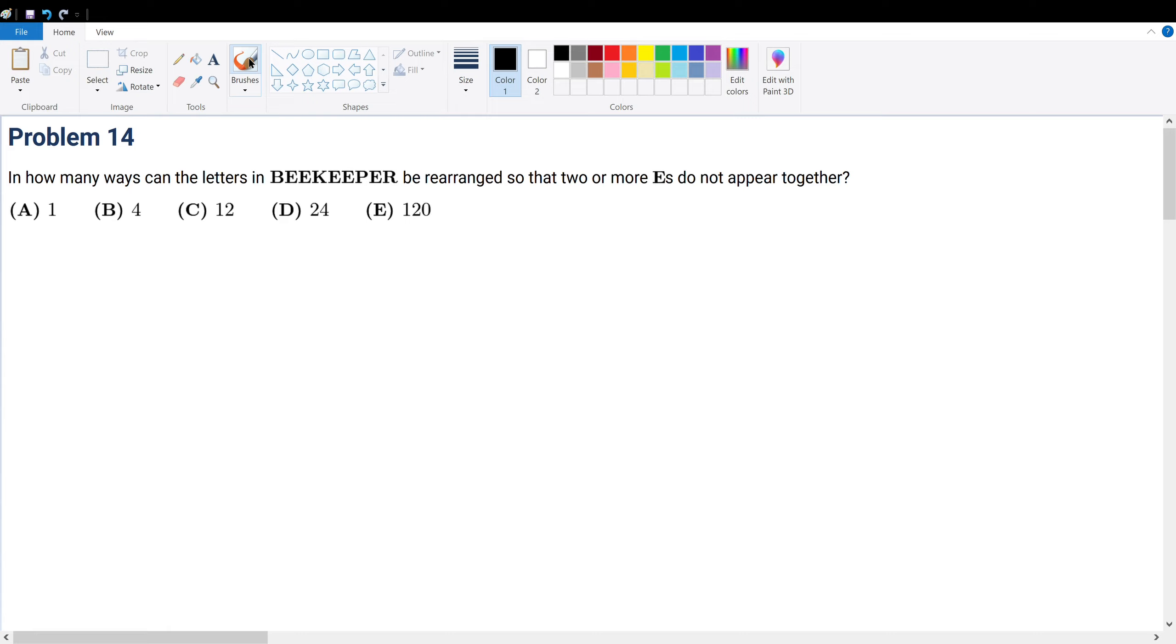Problem 14. How many ways can the letters in BEEKEEPER be rearranged so that two or more E's do not appear together?